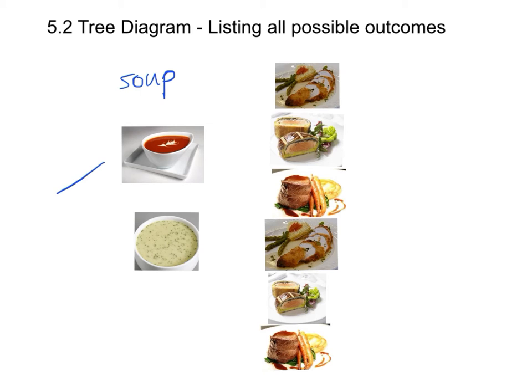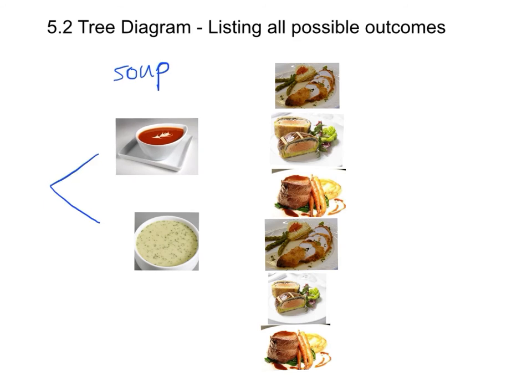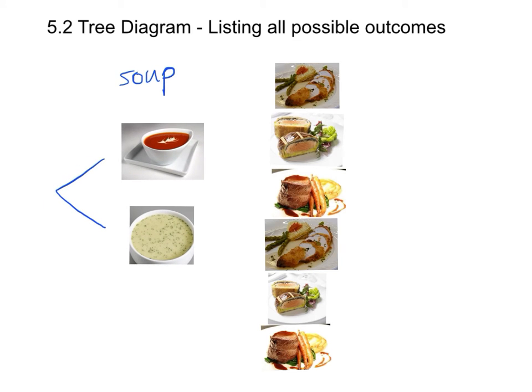In a tree diagram, we always start from a single point and then draw two branches of the tree. Now we have red soup and white soup here.